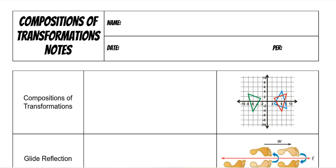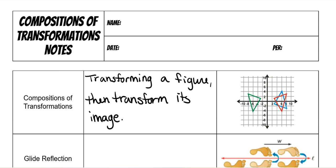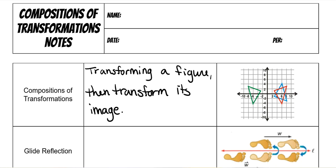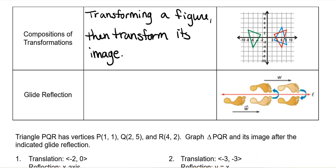The official definition is transforming a figure and then transforming its image. The pre-image is the original — you transform it, find its image, and then transform that image. Here is an example where they reflected the green one over the y-axis to make the red one, and then reflected the red one over the x-axis to make the blue one.